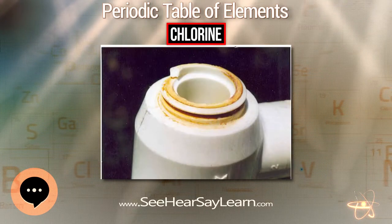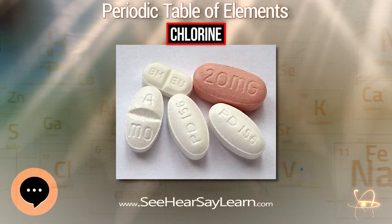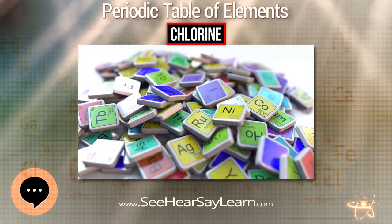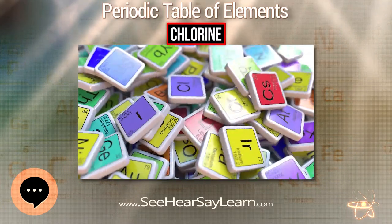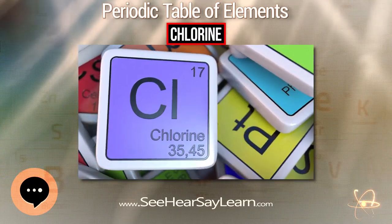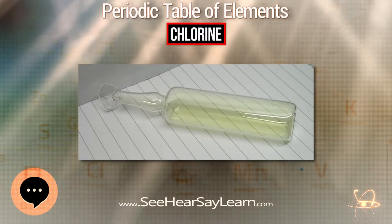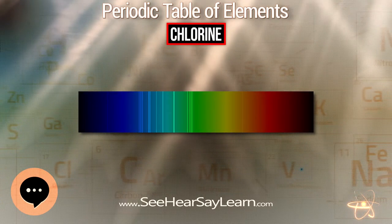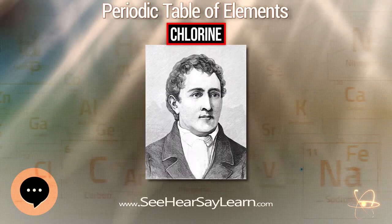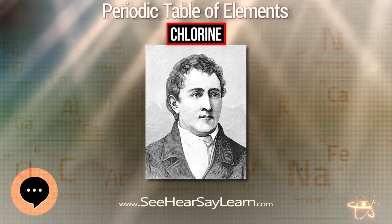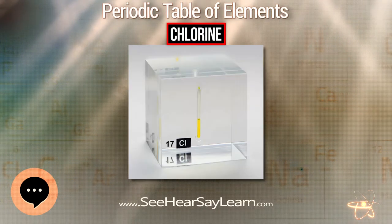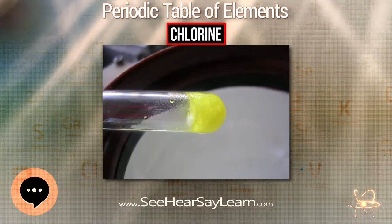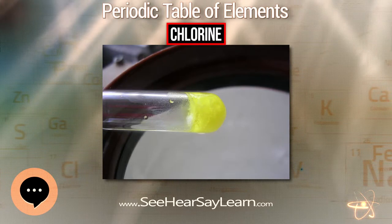Today, chlorine trifluoride is mostly used in nuclear fuel processing to oxidize uranium to uranium hexafluoride for enrichment and to separate it from plutonium. Chlorine pentafluoride, ClF₅, is made on a large scale by direct fluorination of chlorine with excess fluorine gas at 350°C and 250 atm, and on a small scale by reacting metal chlorides with fluorine gas at 100–300°C. It melts at −103°C and boils at 13.1°C. It is a very strong fluorinating agent, although still not as effective as chlorine trifluoride.